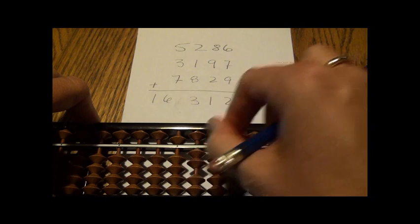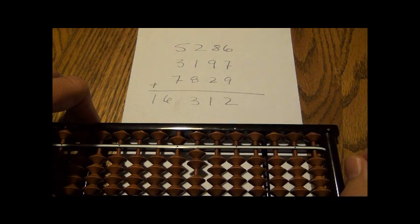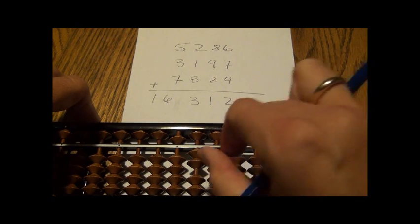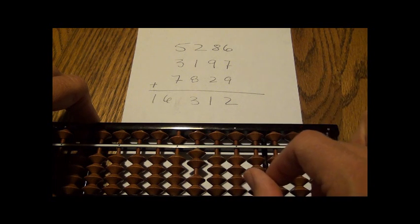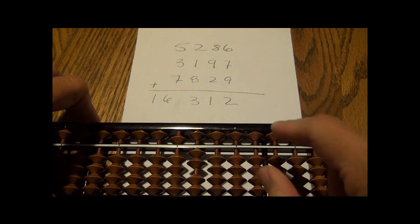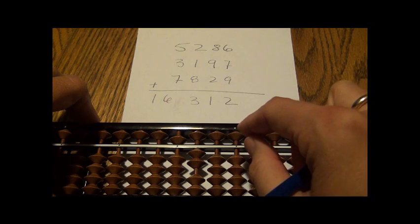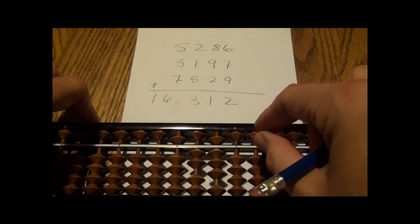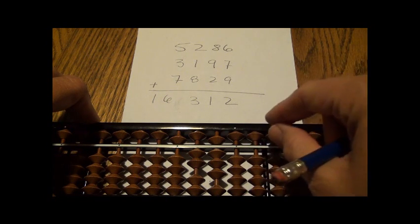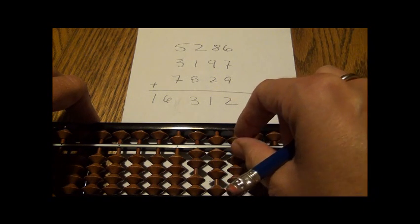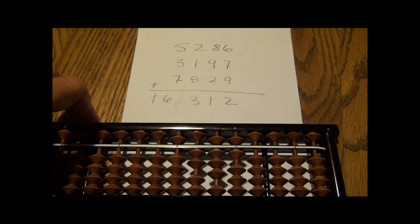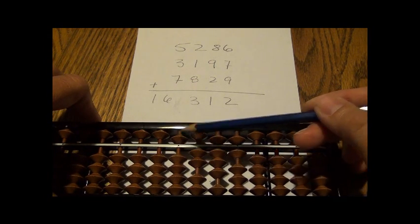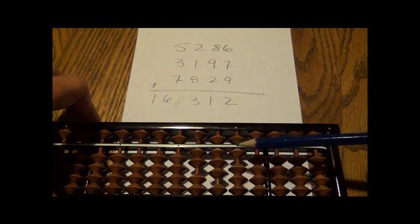Then two on the hundreds rod, two earth beads on the hundreds rod for two hundred. Now tens digit, we need eight. Five plus three is eight. And then we need six in the ones digit. So five plus one is equal to six. So here I've put down 5,286.